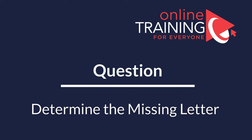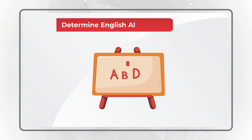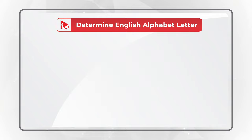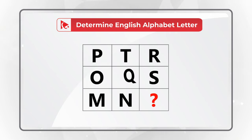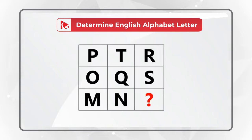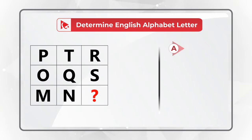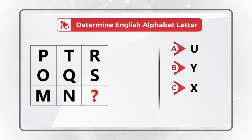Here's one of my favorite questions to test your verbal reasoning as well as your knowledge of the English alphabet. You need to determine the missing letter to replace the question mark. You're presented with a 3x3 matrix containing the letters P, T, R, O, Q, S, M, N, and the missing letter. Choose from: Choice A: U, Choice B: Y, Choice C: X, Choice D: V. Do you see the answer? Give yourself a little bit of time.